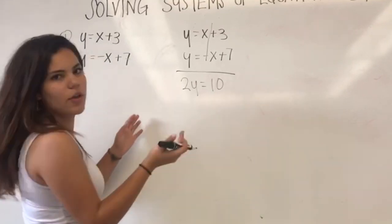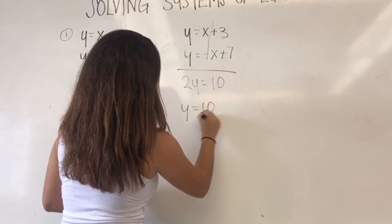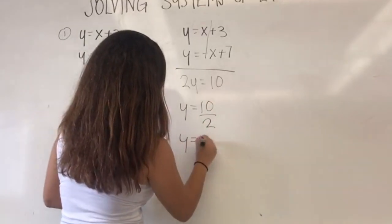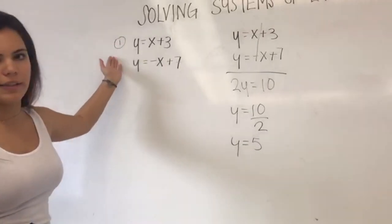So for y, you are going to put y alone, and 10 divided by 2 gives you 5. So now you have the value for 5, and you are going to look for the value of x.